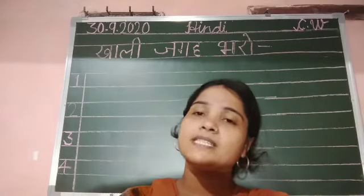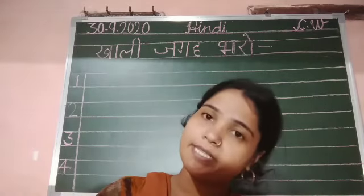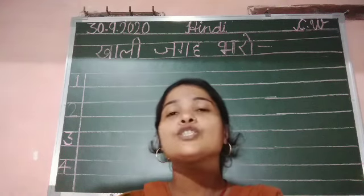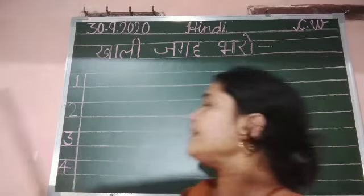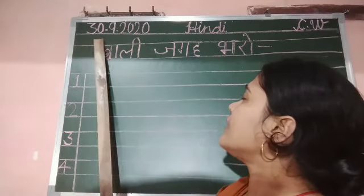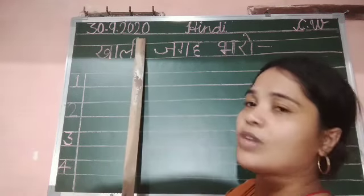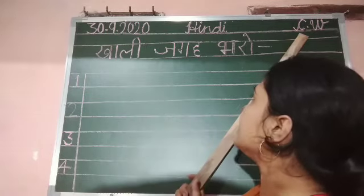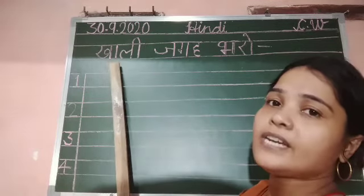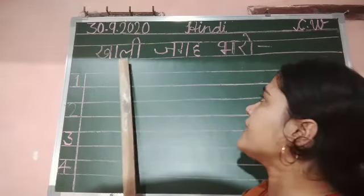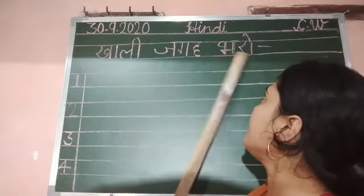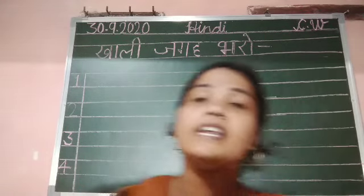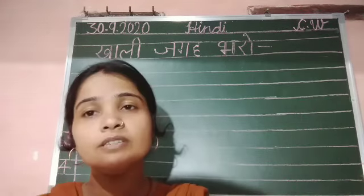Take out your pencil, sharpener, and eraser, and everyone sharpen your pencil. First of all, all of you write the date: 30 September 2020. Then all of you write CW. In the first line, write Kali Jagay Bharo, then hyphen with numbering 1 to 4. Write neat and clean, everyone.